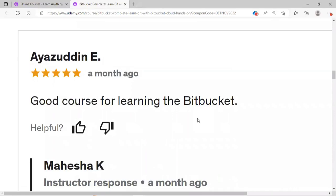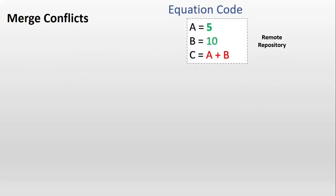You can enroll with my link for better offers. Let us assume there is a remote repository. In that we have one Scala program. In the Scala program file, we have values A equals to 5, B equals to 10, and C equals to A plus B. So we have an arithmetic equation.